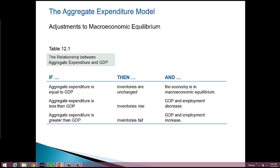For the economy as a whole, equilibrium occurs when aggregate expenditures are equal to GDP. When this happens, inventories are unchanged. That's the first row in our table.